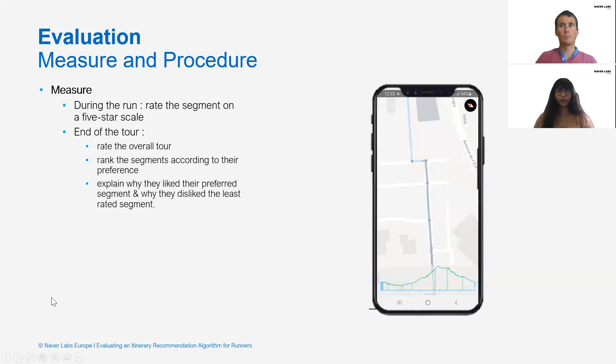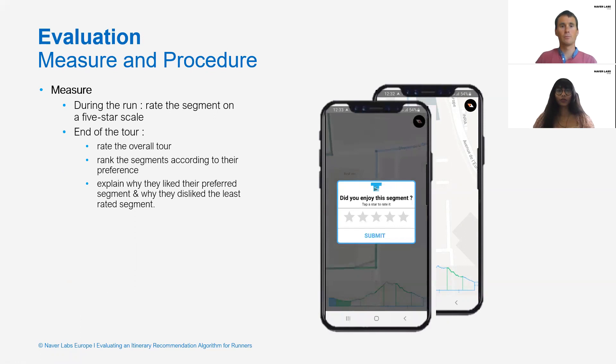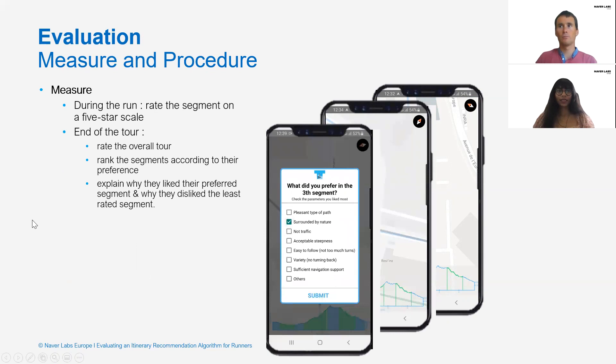In order to measure the correlation, we asked the user during the run to rate on a five-star scale the segments they had just completed. At the end of the tour, they would rate the overall tour, rank the segments, and explain why they liked and disliked the segments.